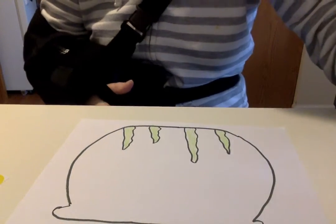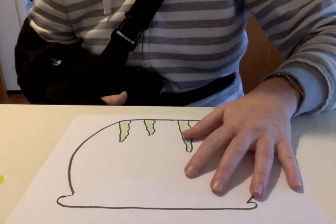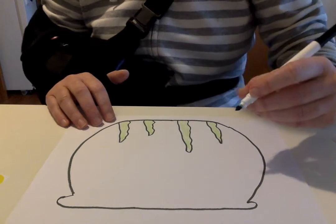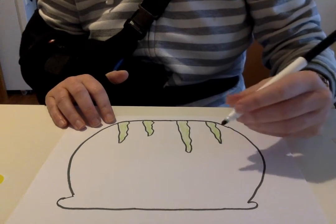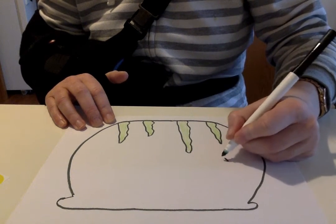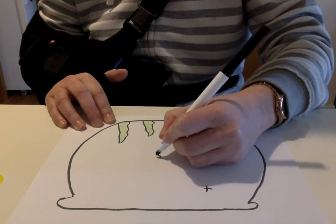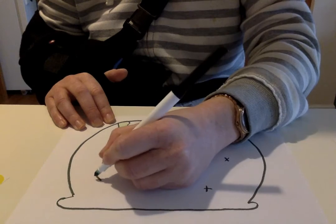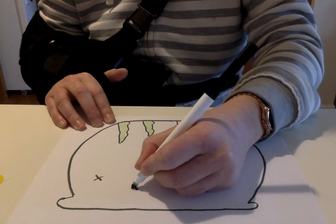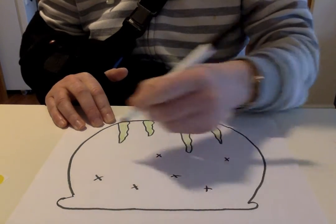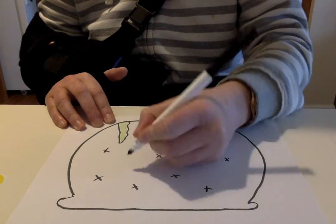Okay now that my seaweed are colored in, I'm gonna make a couple of X's. So I'm gonna make eight X's. One, two, three, four, five, six, seven, eight.